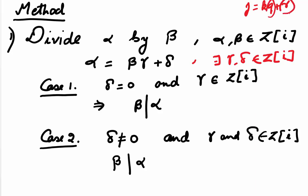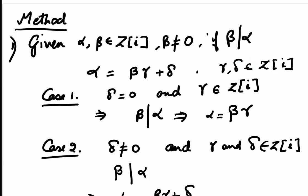But when we divide one Gaussian integer by the other, we might not get our gamma and delta as Gaussian integers. So then how do we write alpha is equal to beta gamma plus delta? Let's look at the method.